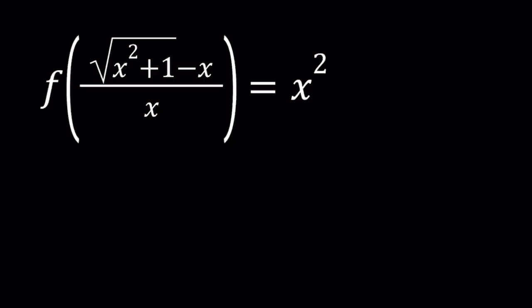Now, there are kind of two types of functional equations, in my opinion. The ones that have two or more variables in them, and the ones that are like this one. These are easier to solve because you don't really have to check a lot of things like what is f of 0, is the function continuous, is it bijective, and so on and so forth.